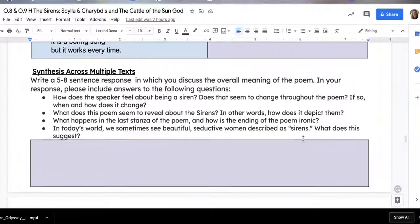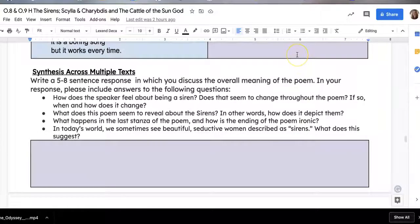The last thing you're going to do, once you answer everything on the right, is you're going to write a five to eight sentence response in which you discuss the overall meaning of the poem. In your response, please include answers to the following questions: How does the speaker feel about being a siren? Does that seem to change throughout the poem? If so, when and how does that change? What does this poem seem to reveal about the sirens? In other words, how does it depict them? What happens in the last stanza of the poem? And how is the ending of the poem ironic? In today's world, we sometimes see beautiful, seductive women described as sirens. What does this suggest?